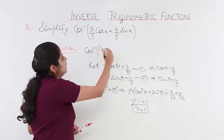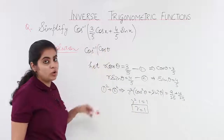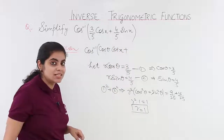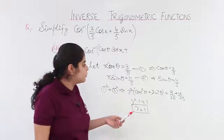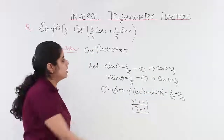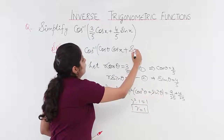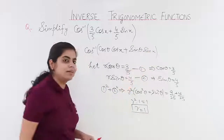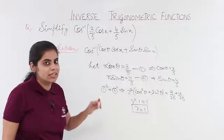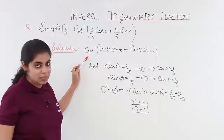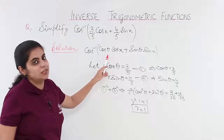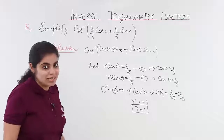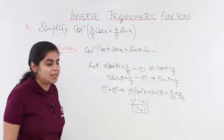Where 3/5 is the value of cos θ, I write it as cos θ, and follow with cos x. Then 4/5 is sin θ, and sin x. So cos inverse remains outside the bracket. The formula we are going to apply is cos a · cos b + sin a · sin b = cos(a − b).